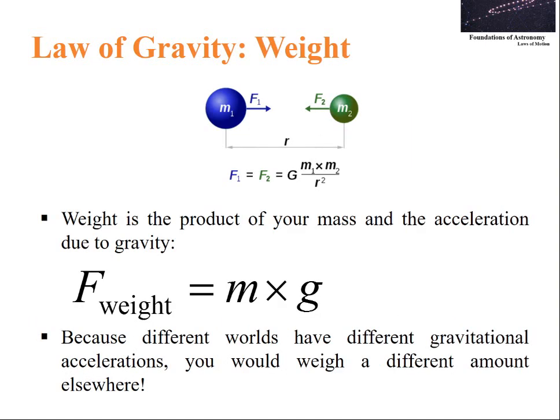Let's define what weight is. Weight is the product of your mass and acceleration due to gravity. F weight equals m times g. Because different worlds have different gravitational acceleration, you would weigh a different amount elsewhere.